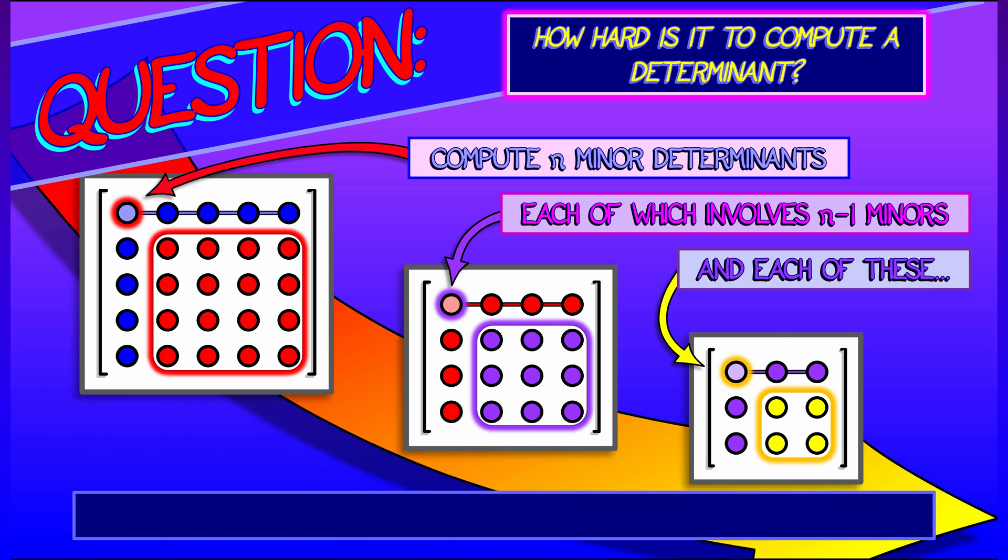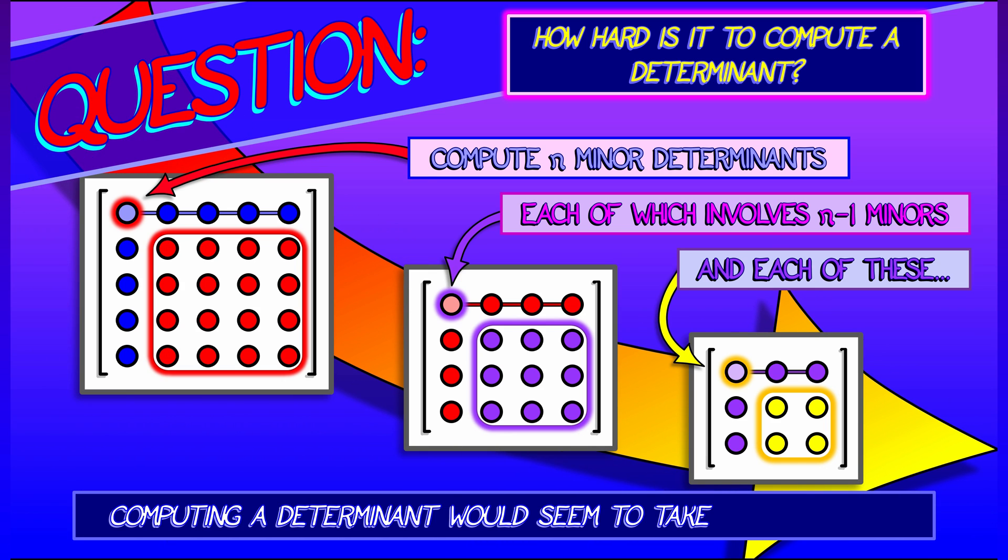How many? It sure seems as though you need to do something like n factorial operations in order to compute that determinant. And that means game over. There's no way you're going to be able to compute the determinant of a 100 by 100 matrix.